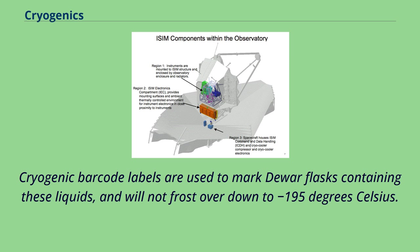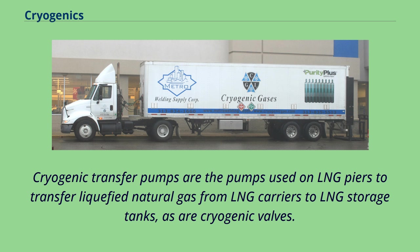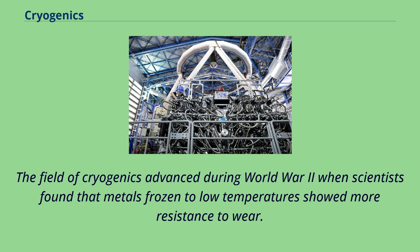Cryogenic barcode labels are used to mark Dewar flasks containing these liquids and will not frost over down to minus 195 degrees Celsius. Cryogenic transfer pumps are the pumps used on LNG piers to transfer liquefied natural gas from LNG carriers to LNG storage tanks, as are cryogenic valves.